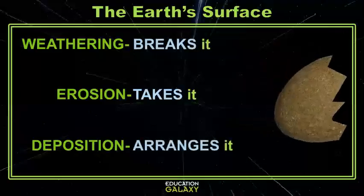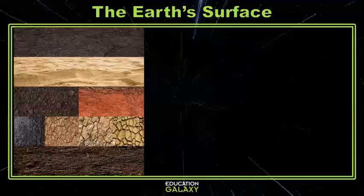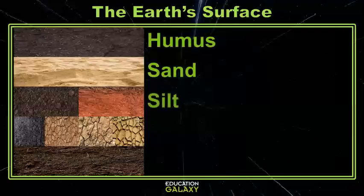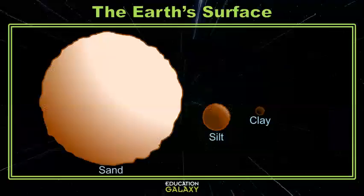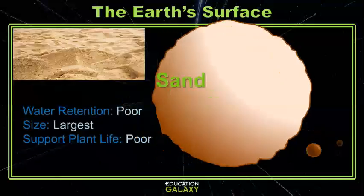When the rock is broken, it turns into soil. There are five different components of soil: humus, sand, silt, clay, and loam. Humus is organic matter, and it's made of dead and decomposing plants, like compost. Sand, silt, and clay are all pieces of rock and minerals. Sand is the largest. Due to its size, it doesn't retain water well, and so without a lot of water, it doesn't support plant life either.